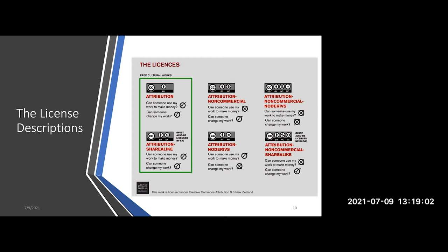Attribution means you just give credit to the person who created the work. Can someone use my work? Can someone use my work to make money? Yes. Can someone change my work? Yes. That's what the CC BY license says. The next license is CC BY SA — SA stands for share alike. So it's Creative Commons Attribution Share Alike. Can someone use my work to make money? Yes. Can someone change my work? Yes.